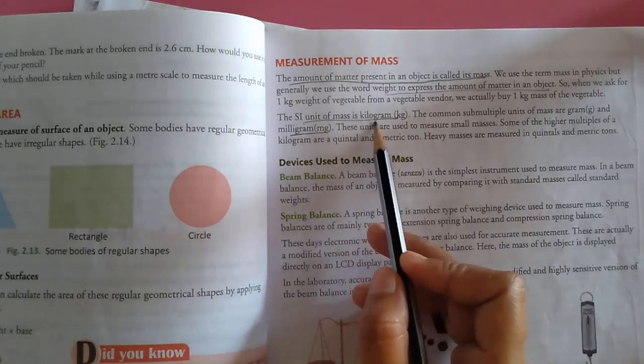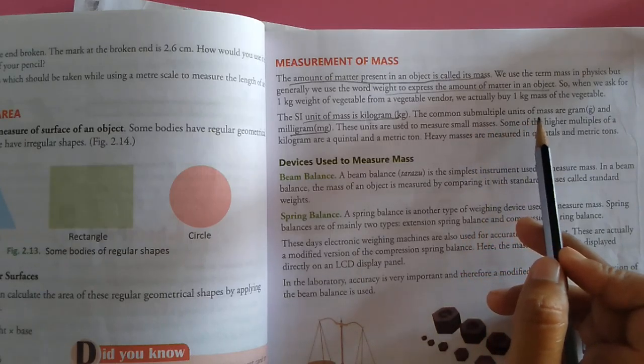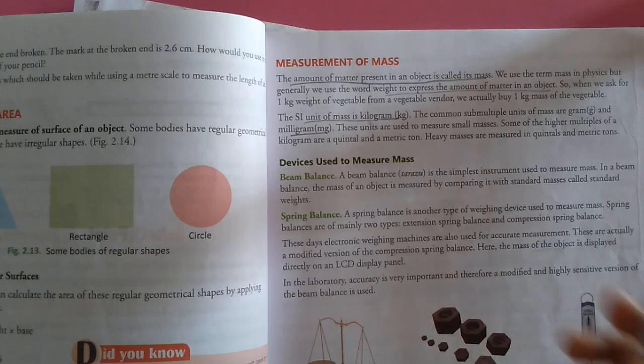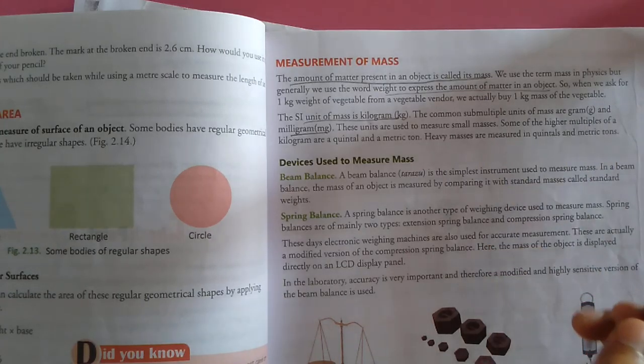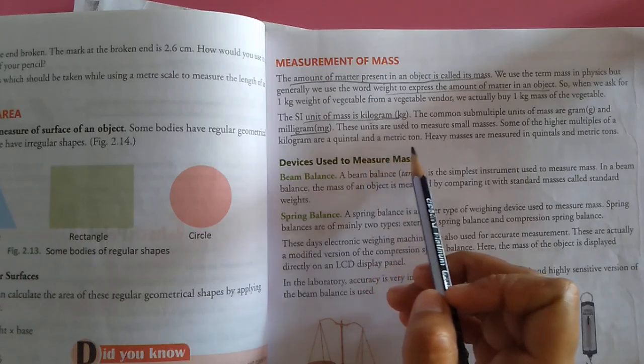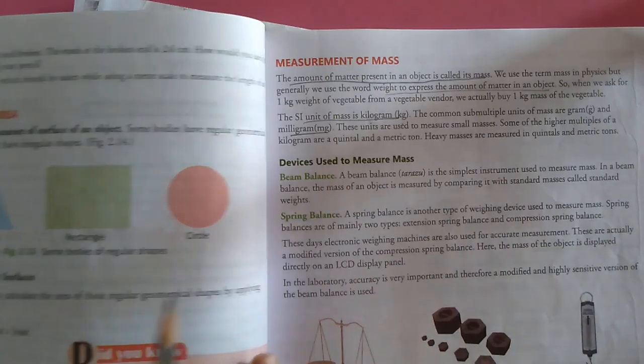The SI unit of mass is kilogram. The common submultiple units of mass are gram and milligram. These units are used to measure small masses. Some multiples of kilograms are quintals and metric ton. Heavy masses are measured in quintals and metric tons.